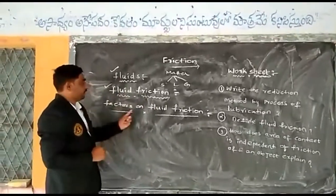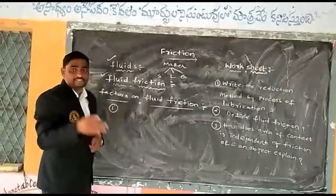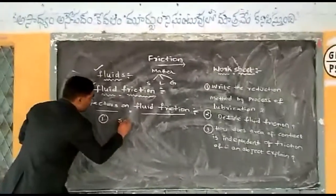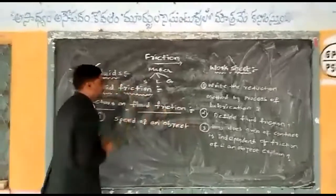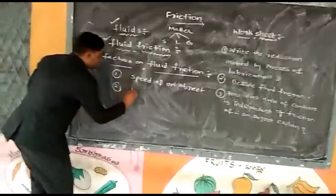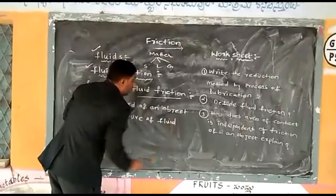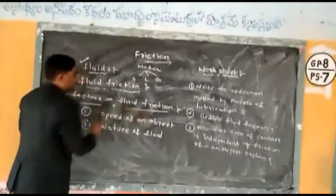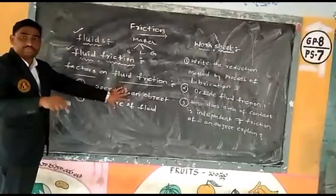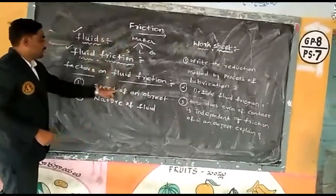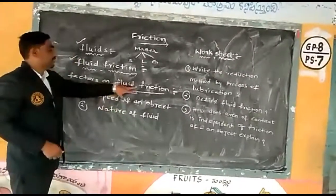Now let me explain the factors which can affect fluid friction. There are three factors. One is the speed of the object moving through the fluid — the speed of an object also affects the rate of fluid friction. The second factor is the nature of the fluid, which also affects the rate of fluid friction.